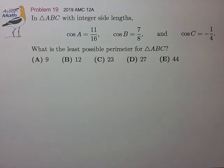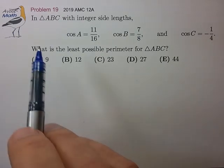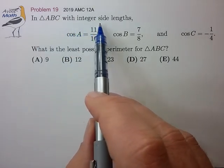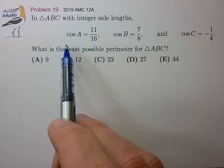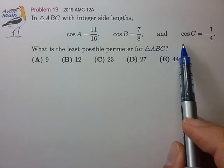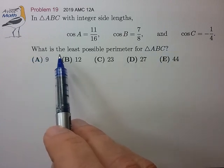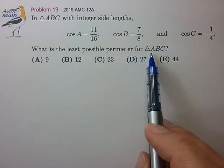Hi, this is problem 19 from the 2019 AMC 12A. In triangle ABC with integer side lengths, we have these cosines for the three angles. What is the least possible perimeter for triangle ABC?